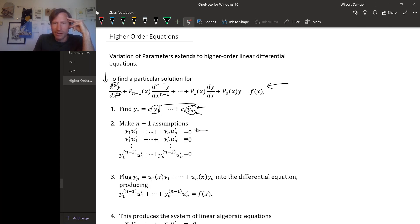If you look at this first one, this is the same assumption as we made in the second order case. But since we're going to have more unknown functions u, we get to make more assumptions about equations those u's will satisfy. And these are the appropriate equations, it turns out. There are n minus 1 of these.